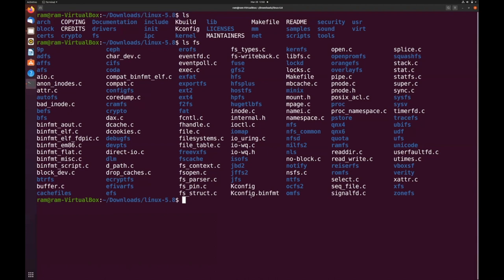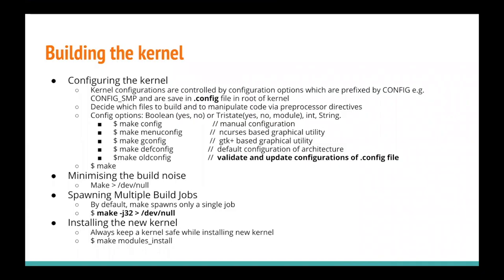To get familiar with the Linux source code, you can visit each directory and see what they contain. Now let's discuss how we can build the kernel. After downloading the source code, we have to configure it for specific architectures before building. All configurations are saved in the .config file. These configuration options decide which files to build and how to manipulate code via preprocessor directives. Configuration options can be of different types including boolean, tri-state, int, or string.